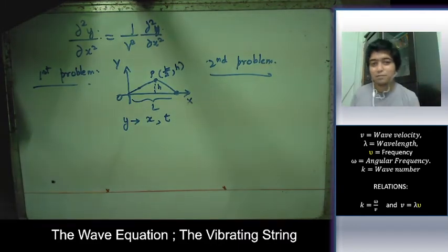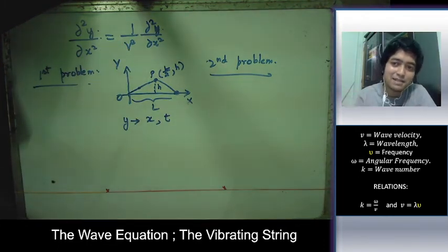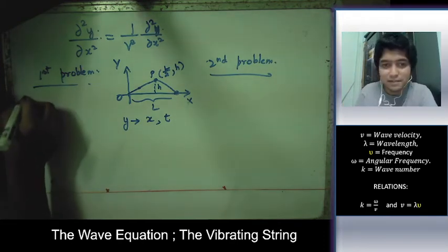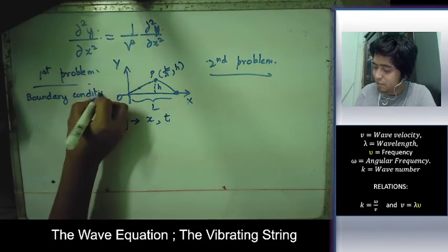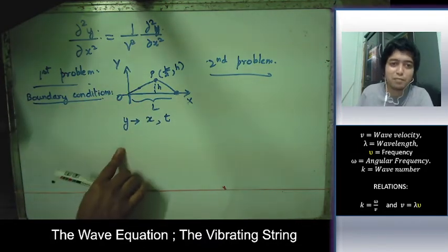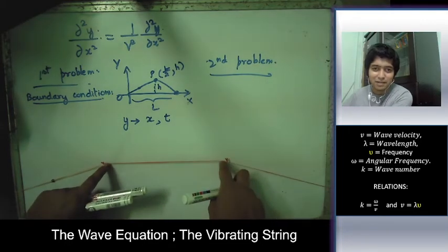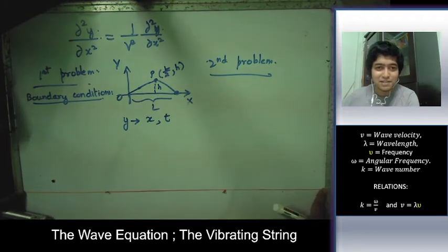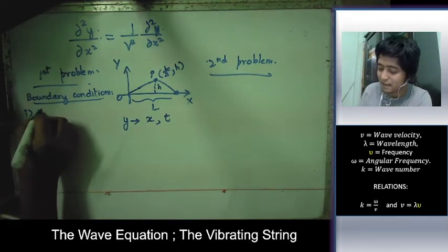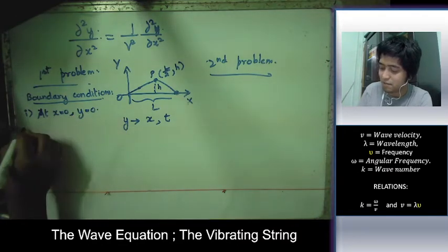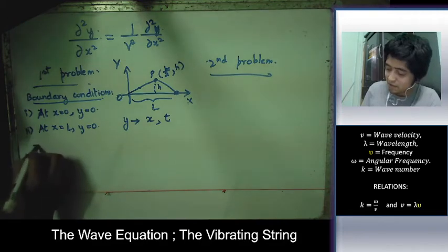To solve this PDE we need initial conditions and boundary conditions. The boundary conditions are: at x=0, y=0, and at x=L, y=0, because the endpoints of the string are always fixed.